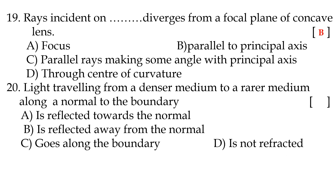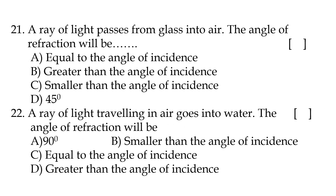Nineteenth question: rays incident on a concave lens diverge from the focal plane — option A, parallel to the principal axis. Twentieth question: light traveling from a denser medium to a rarer medium along the normal to the boundary — answer D, is not refracted. Twenty-first question: a ray of light passes from glass into air; the angle of refraction will be option B, greater than the angle of incidence, because light travels from denser to rarer medium.